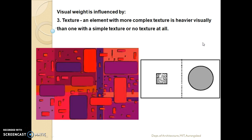Visual weight is influenced by texture. An element with a more complex texture is heavier visually than one with a simple texture or no texture at all. An element with complex texture versus elements with simple texture.